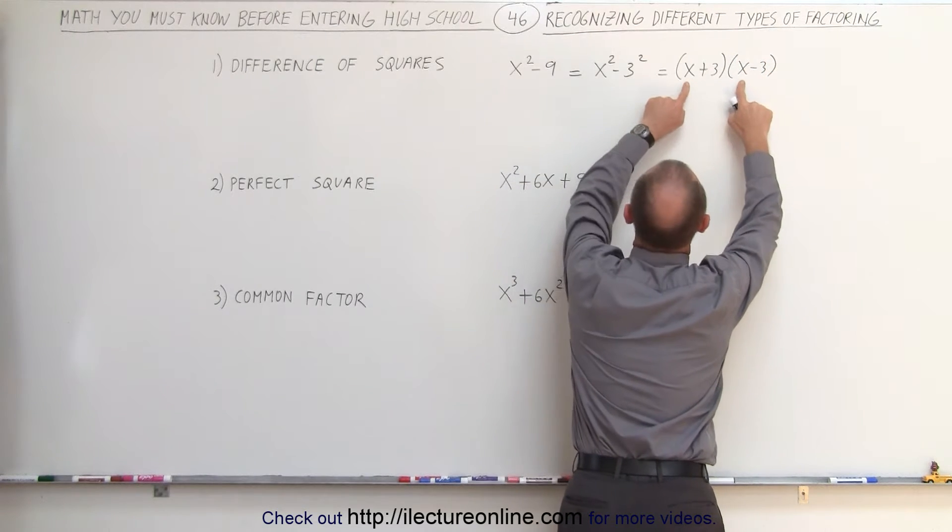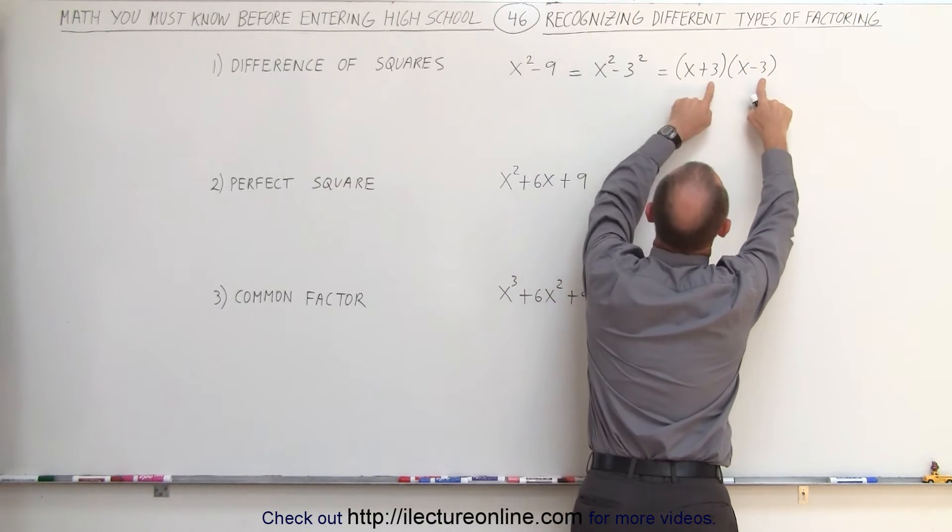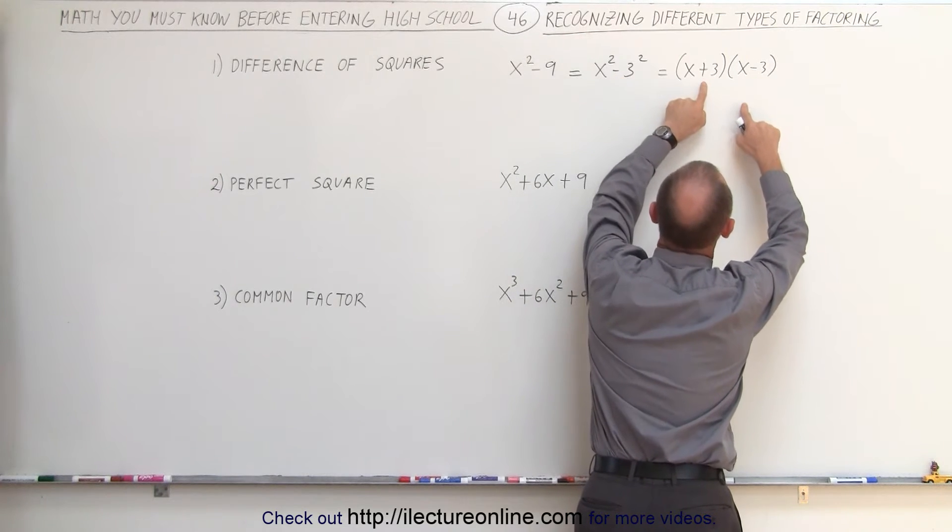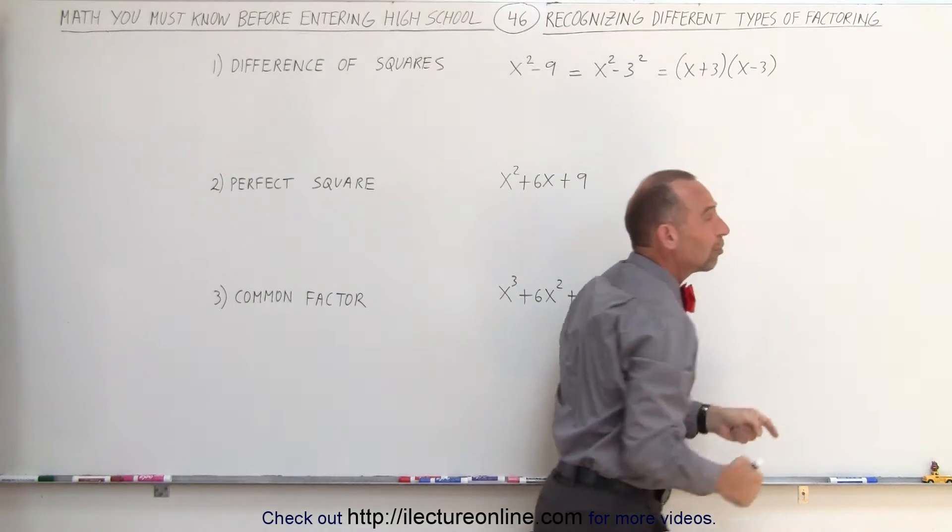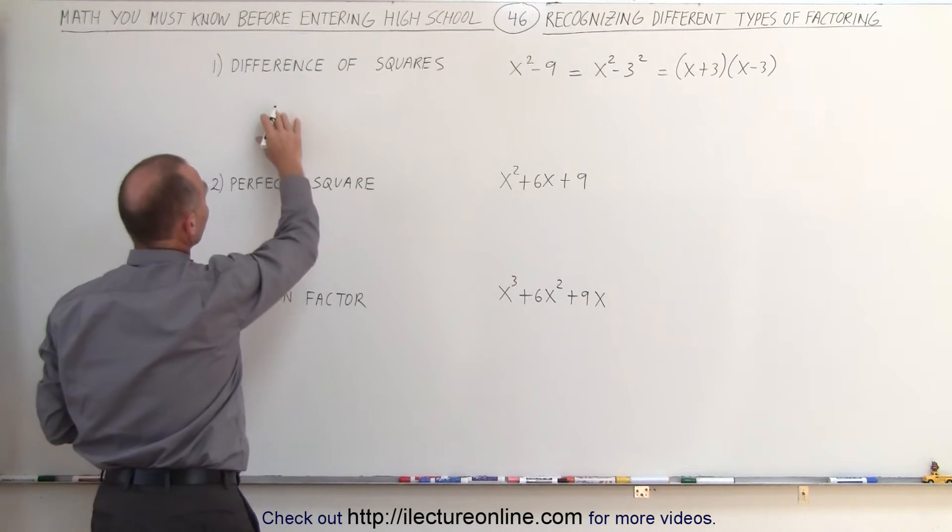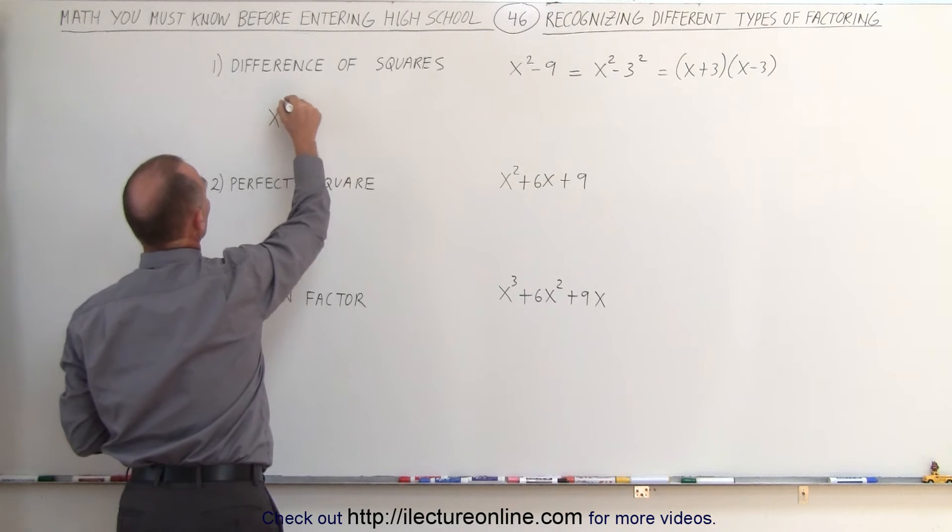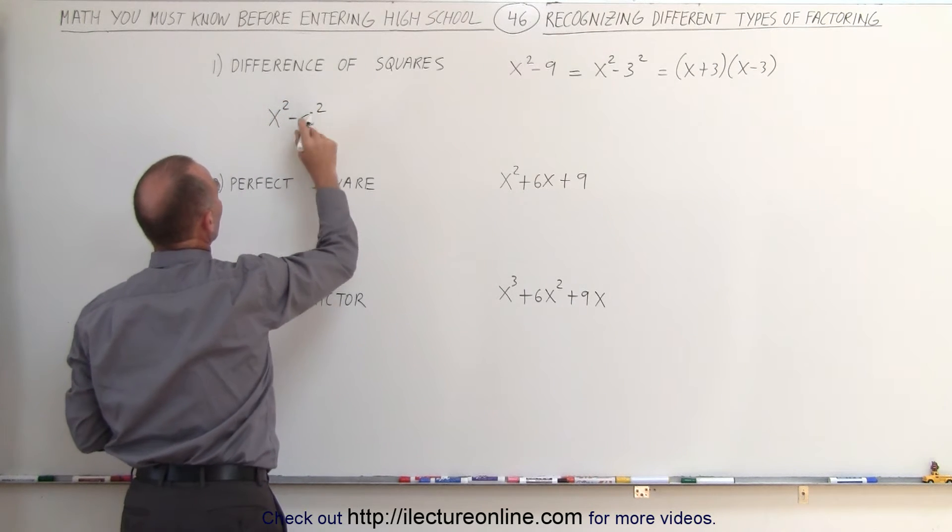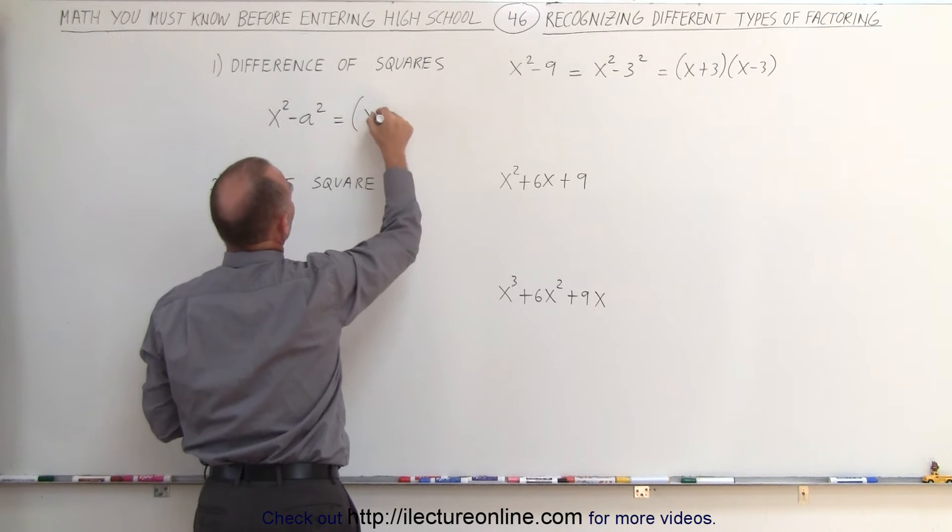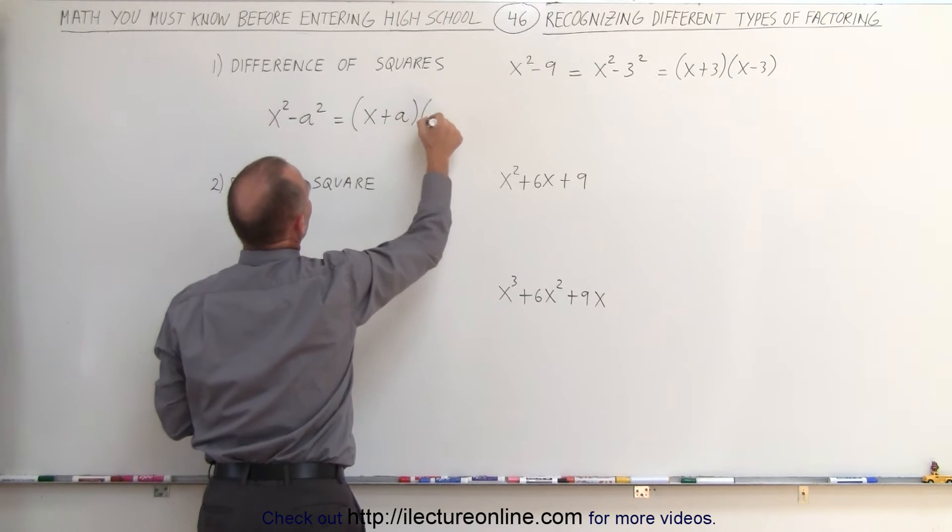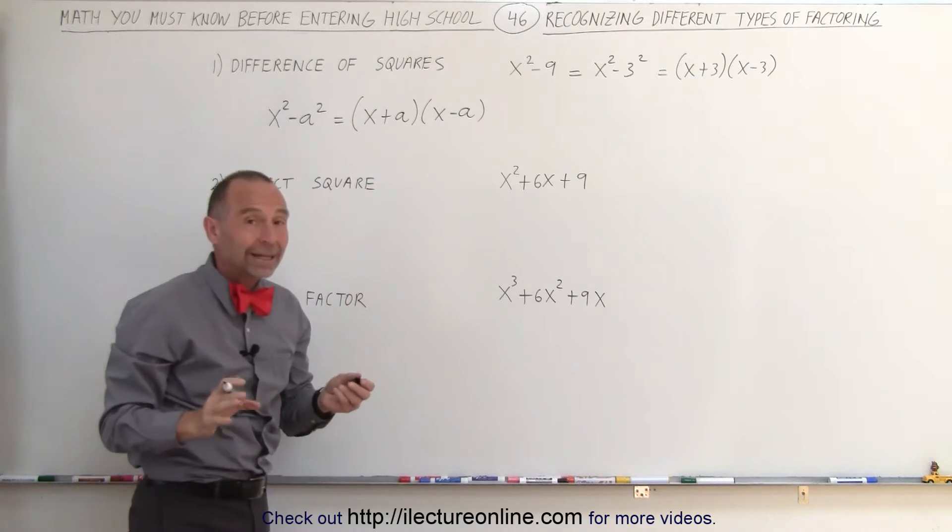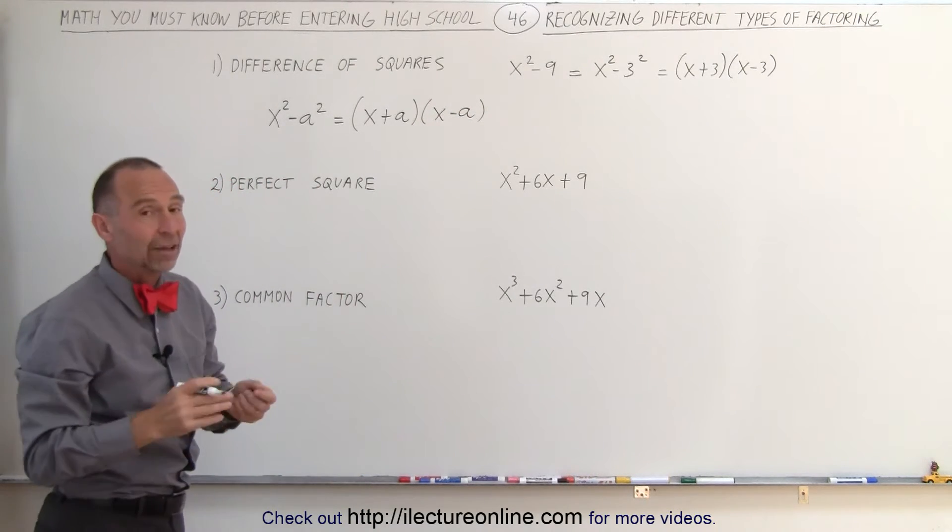Notice we have x times x, and we have 3 times 3. The sign, however, can only be negative here if we have a plus and a minus there, which also causes the middle term to disappear. Therefore, the general form of the difference of squares is x squared minus a squared, where a can be any number, and that can then be written or factored as x plus a times x minus a. Therefore, it's important to recognize the difference of squares when you're asked to factor.